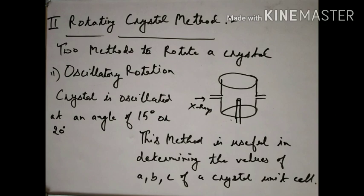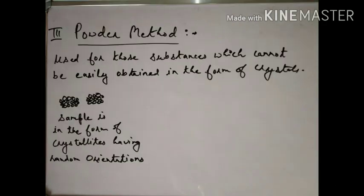The third and last method is the powder method. As the name suggests, the crystal is in powder form. This method is used for substances which cannot be easily obtained in the form of a single crystal. Some substances don't come in single crystal form, so they are used in powdered form.